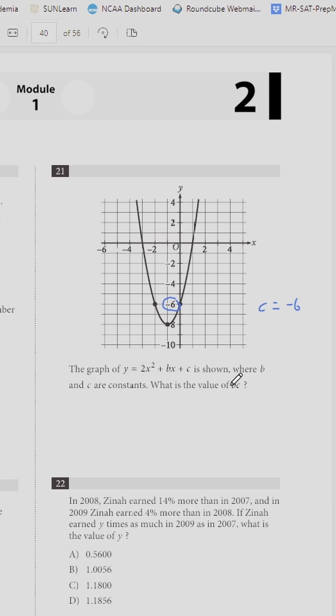The way we get b is using the x-coordinate of the vertex. We use the formula -b/(2a) to get that coordinate. The x-coordinate of the vertex here is -1, so that equals -1.